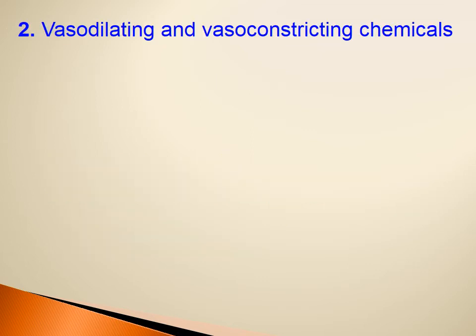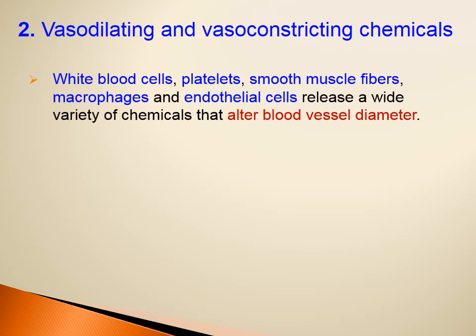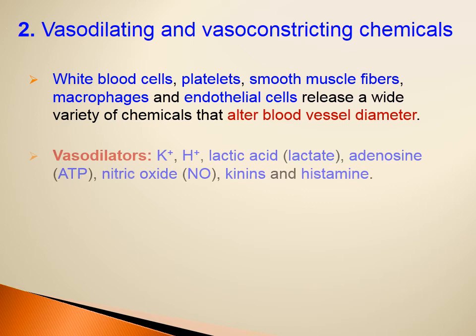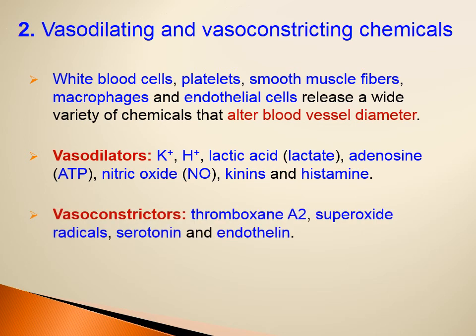Vasodilating and vasoconstricting chemicals that mediate the autoregulatory mechanism are released by white blood cells, platelets, smooth muscle fibers, macrophages, and endothelial cells. Vasodilators include potassium, hydrogen, lactic acid, adenosine, nitric oxide, kinins, and histamine. Vasoconstrictors include thromboxane A2, superoxide radicals, serotonin, and endothelin.